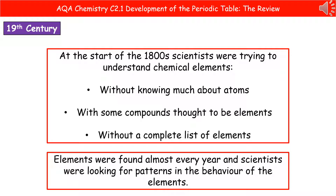When we go back to the start of the 1800s, scientists were trying to understand chemical elements, but they had a few problems. First of all, they didn't really know much about atoms, as we've seen in C1 where we looked at the history of the atom. At the start of the 1800s, their knowledge was a bit rubbish. They also thought some compounds were elements, and they didn't have a complete list of all of the elements. During the 1800s, elements were being found almost every year, and scientists were starting to look for patterns in the behaviour of elements to allow them to order them in some way.